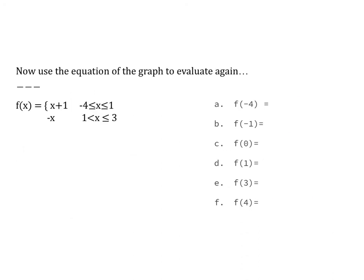Now we have the same values but with equations to verify our graph answers. The first piece is x plus 1 for x from negative 4 to 1, and the second piece is negative x for x from 1 to 3. For f(negative 4): negative 4 is greater than or equal to itself, so I use the first piece: negative 4 plus 1 equals negative 3 — matching our graph. For f(negative 1): negative 1 is between negative 4 and 1, so the first piece gives negative 1 plus 1, which is 0.